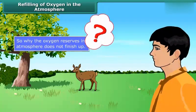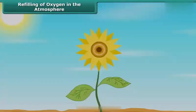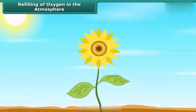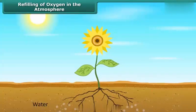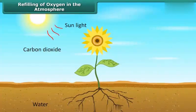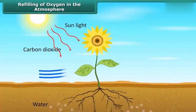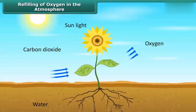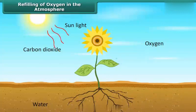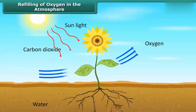During photosynthesis, plants produce oxygen which is released into the atmosphere. Plants also consume oxygen for respiration, but they produce more of it than they consume. So the plants silently save us from dying without even being noticed.